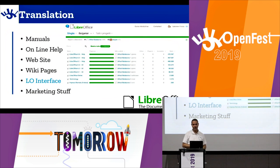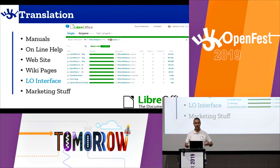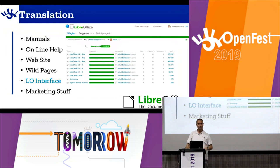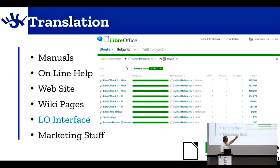Then we have Translation. Translation involves a lot of material — first of all, manuals written in English need to be translated into Bulgarian, Italian, or whatever your language. That includes online help, website pages, wiki pages, and the LibreOffice interface itself. Probably someone like Mikhail Balanov has done the Bulgarian interface translation — and as I can see, he is the most active contributor, followed by Storian. Marketing materials like presentations, video subtitles, and flyers also need to be translated into native languages — we call these NLP: native language projects.